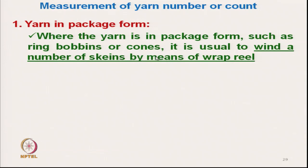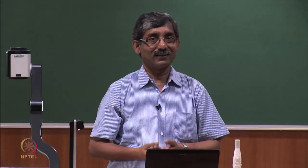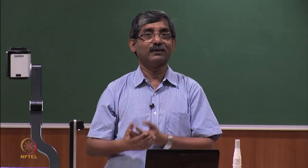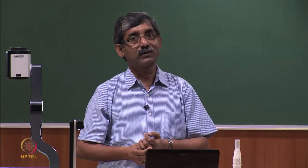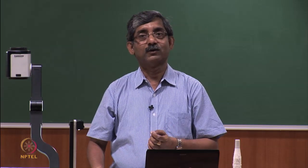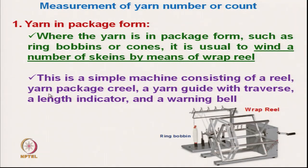When the yarn is in package form such as a ring bobbin or cone, it is usual to wind a number of hanks or lees of a certain length by using a wrap reel. This wrap reel is a simple machine which consists of a reel. There is a yarn package — a ring bobbin — and a package creel.